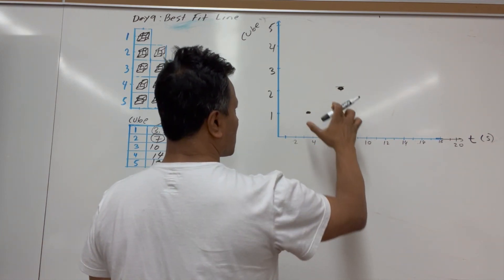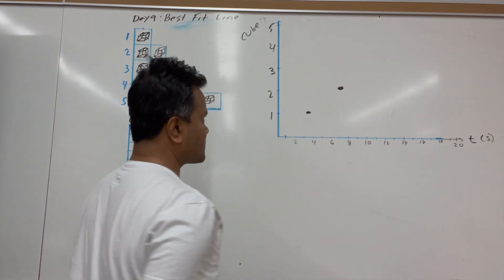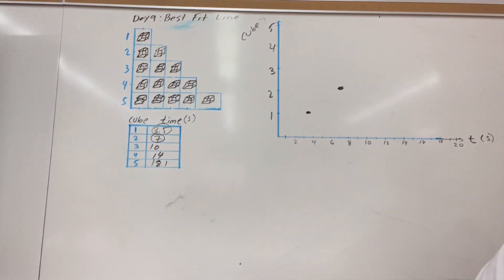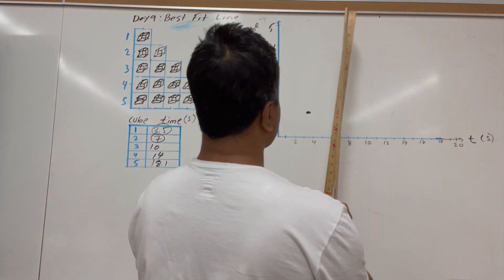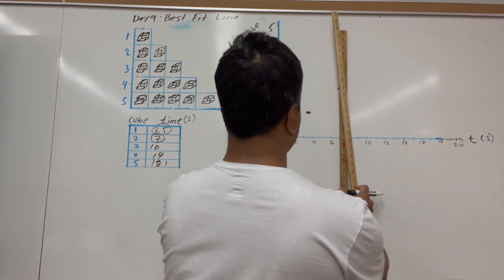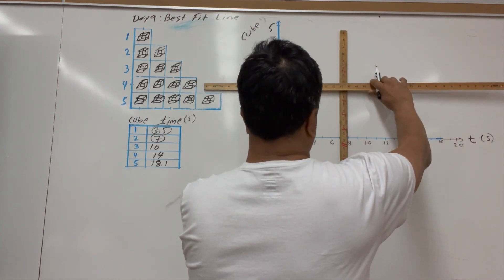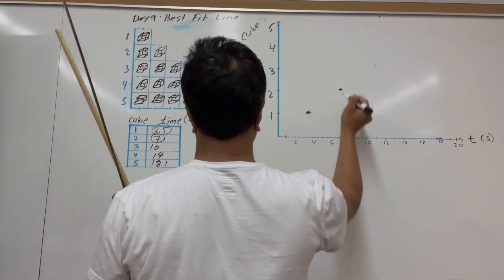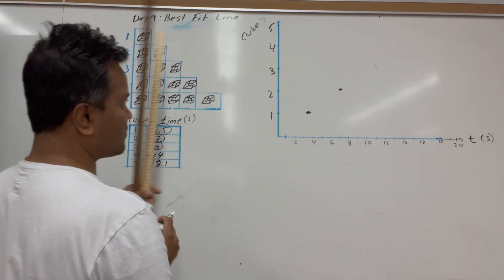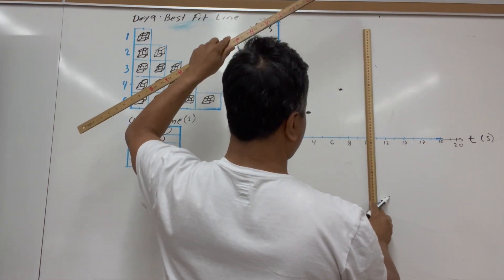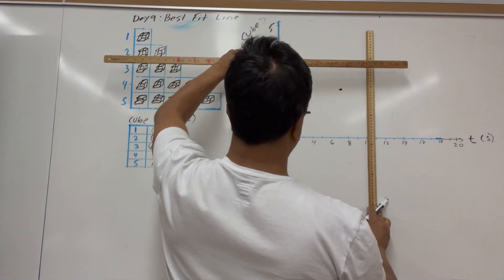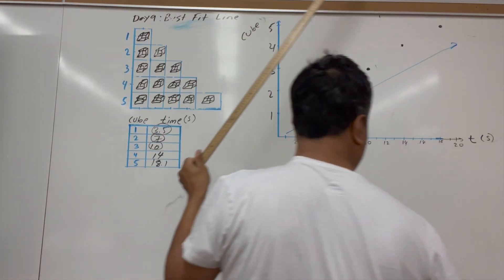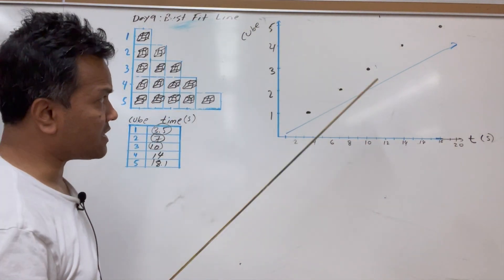I can rotate this way just to get a better result. Seven and two is right here, and ten and three — so I have ten on the time axis and three on the cube axis. Now this line is not a best-fit line because all the data points are above it.